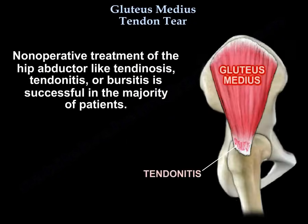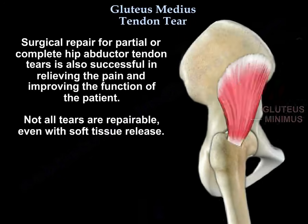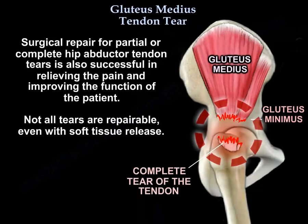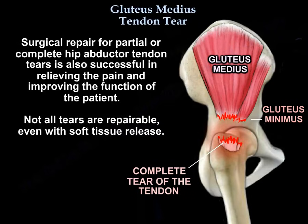Non-operative treatment of hip abductor tendinosis, tendinitis, and bursitis is successful in the majority of patients. Surgical repair for partial or complete hip abductor tendon tears is also successful in relieving pain and improving function. However, not all tears are repairable even with soft tissue release.